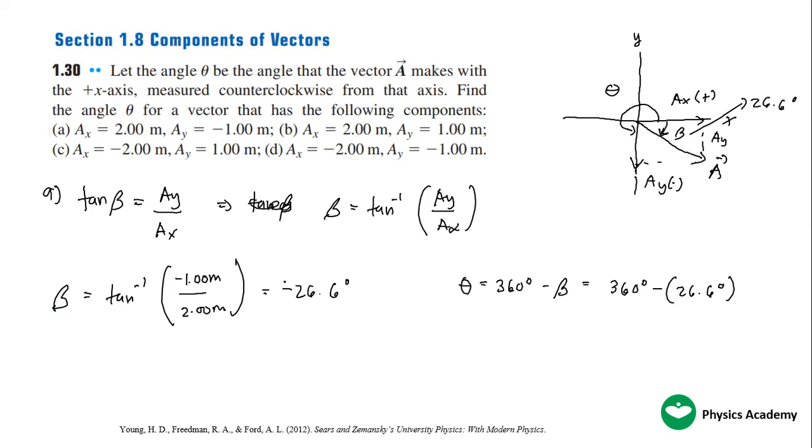The angle here is 26.6 degrees. The negative says the direction of rotation is clockwise rotation. But if you want to find this angle phi, it's just 360 minus this angle beta, which is 26.6 degrees.